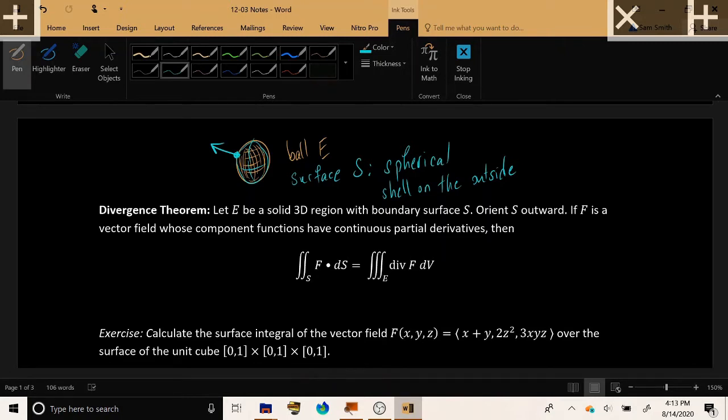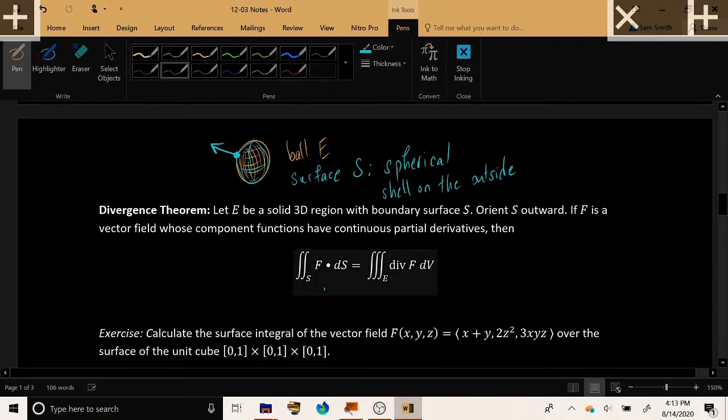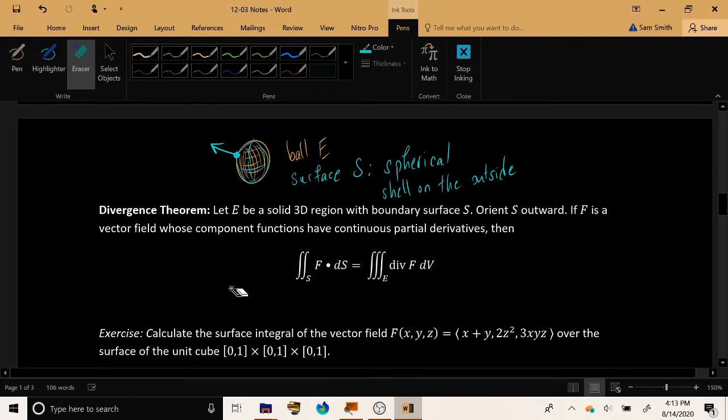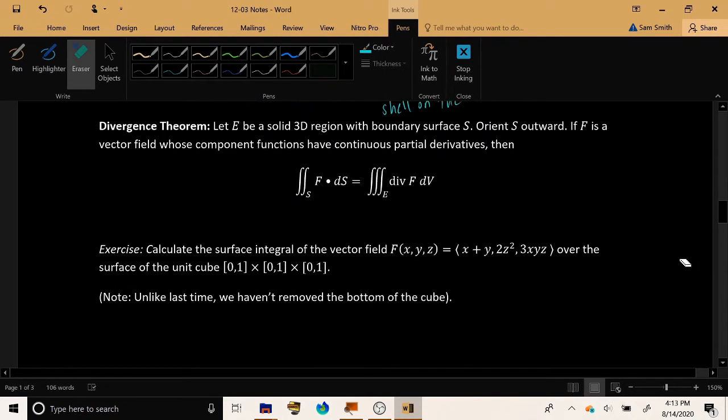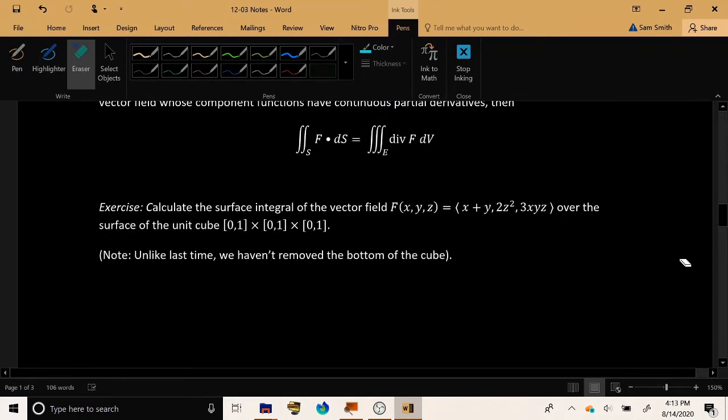So if you don't like one of these calculations, you can always switch to the other of these calculations and do the one that you like the most and get the same result as if you had done the original hard question. So let's consider the following example. It says calculate the surface integral of the vector field F given by these component functions over the surface of the unit cube 0 to 1 in all directions.